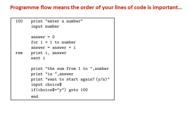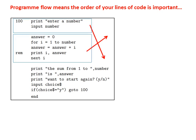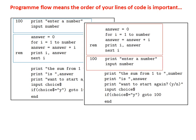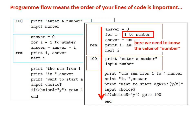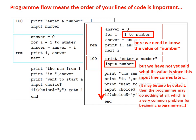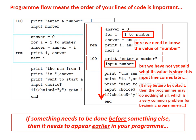Here is an example showing how program flow means that the order of your lines of code is important. Suppose we take these two blocks of code and reverse their order in the program. What goes wrong when we apply program flow from top to bottom? Well here, we need to know the value of number, but we have not yet said what its value is, since this input line comes later. It may be zero by default, and then the program may do nothing at all, which is a very common problem for beginning programmers. So if something needs to be done before something else, then it needs to appear earlier in your program.